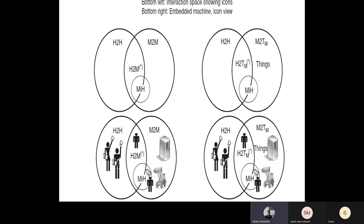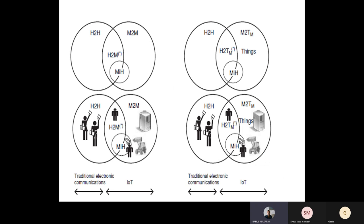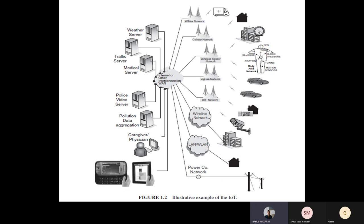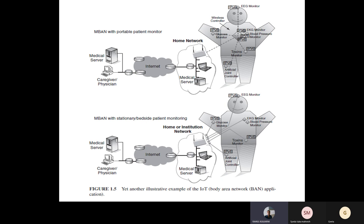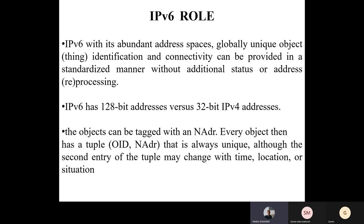You don't have to draw a complex graphical representation — just draw circles and mention what they are, and that is more than enough in the examination. You should practice this diagram two to three times so you can draw these figures easily. Then let us take a look at the IPv6 role discussed in the last class.